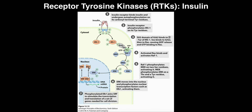ERK specifically phosphorylates a transcription factor called ELK-1. When ELK-1 becomes phosphorylated, it dimerizes with another transcription factor called SRF, forming a heterodimer. Together they bind to DNA in certain regions and induce transcription, upregulating genes involved in insulin-type functions — for example, the gene for the GLUT4 channel, which facilitates glucose entry into cells.